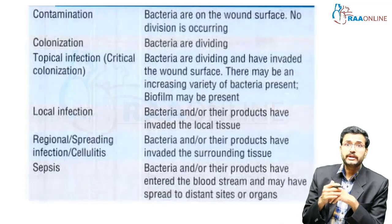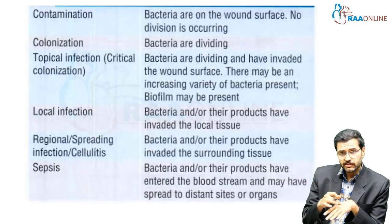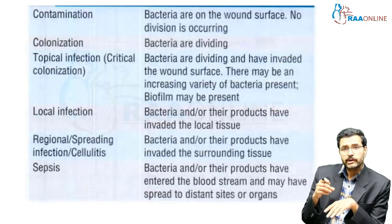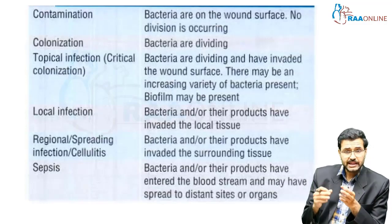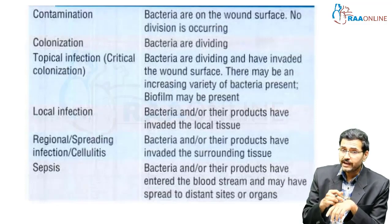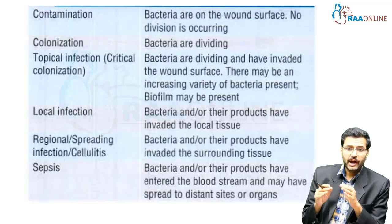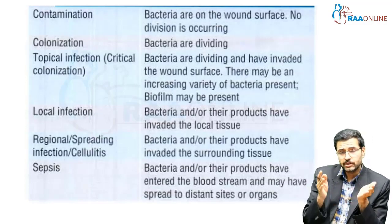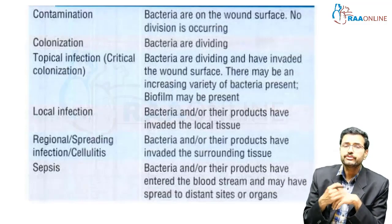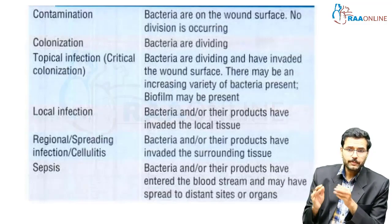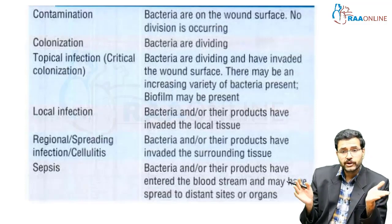Topical infections, or critical colonization: here the bacteria are dividing and they invade the wound surface, but there is no involvement of deeper or surrounding tissues. Local infection: here the bacteria along with their products have invaded the local tissue, but the surrounding normal tissue is not affected. When the surrounding normal tissue is affected, it is called regional or spreading infection, or cellulitis. Sepsis is when the bacteria and their products enter the bloodstream and have spread to different organs or sites.